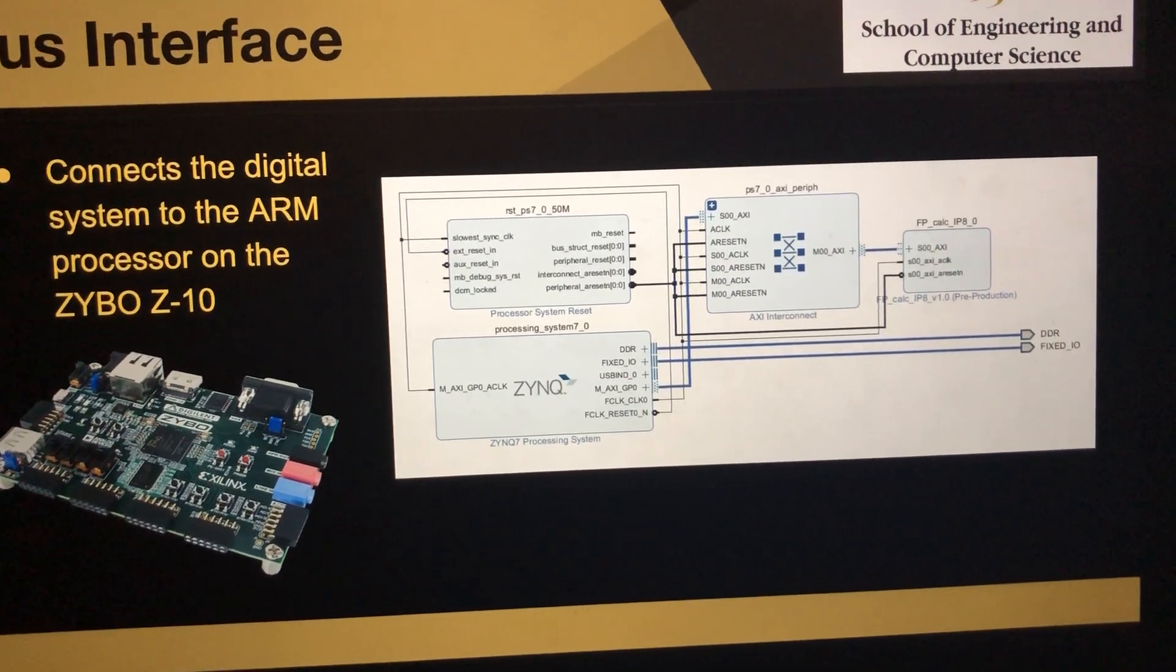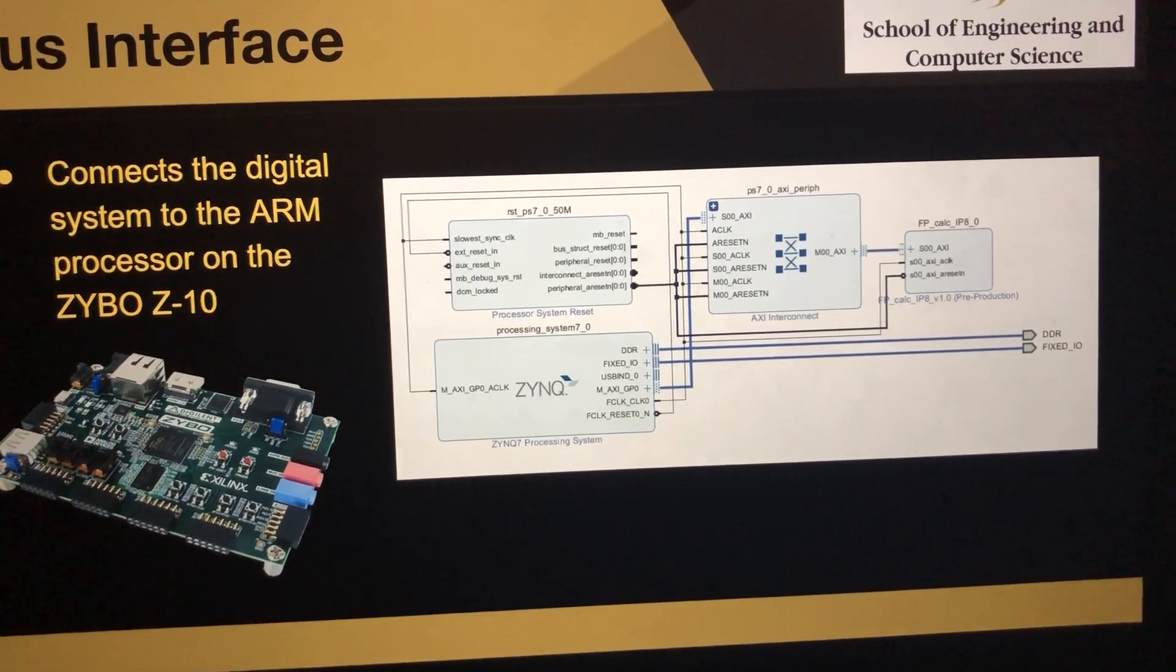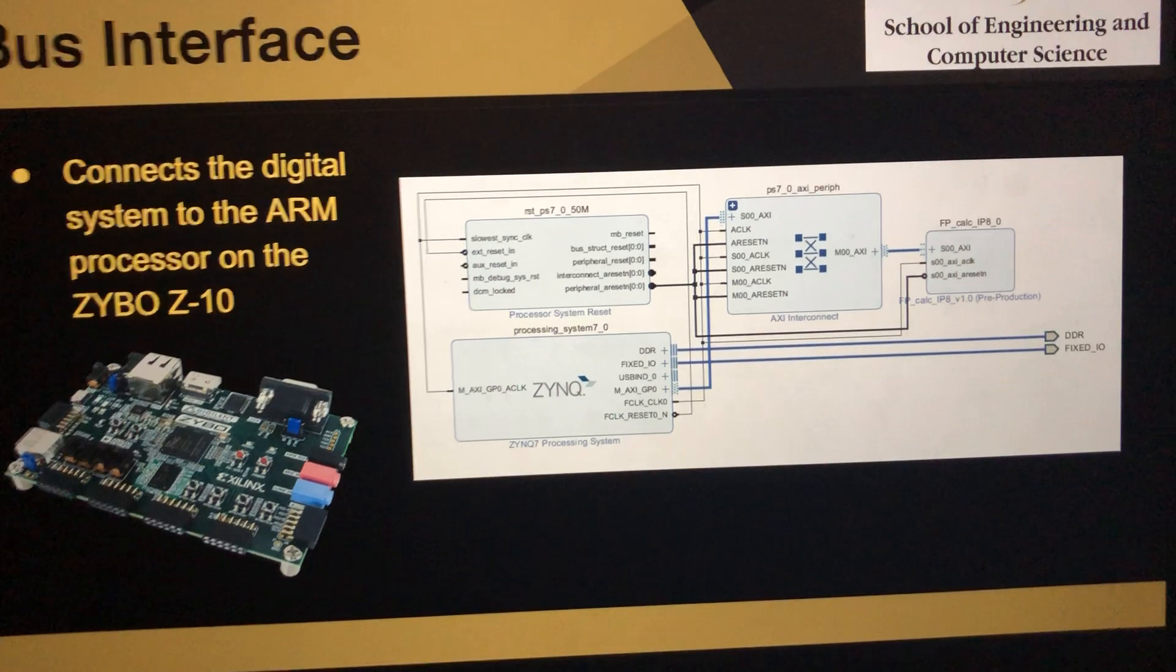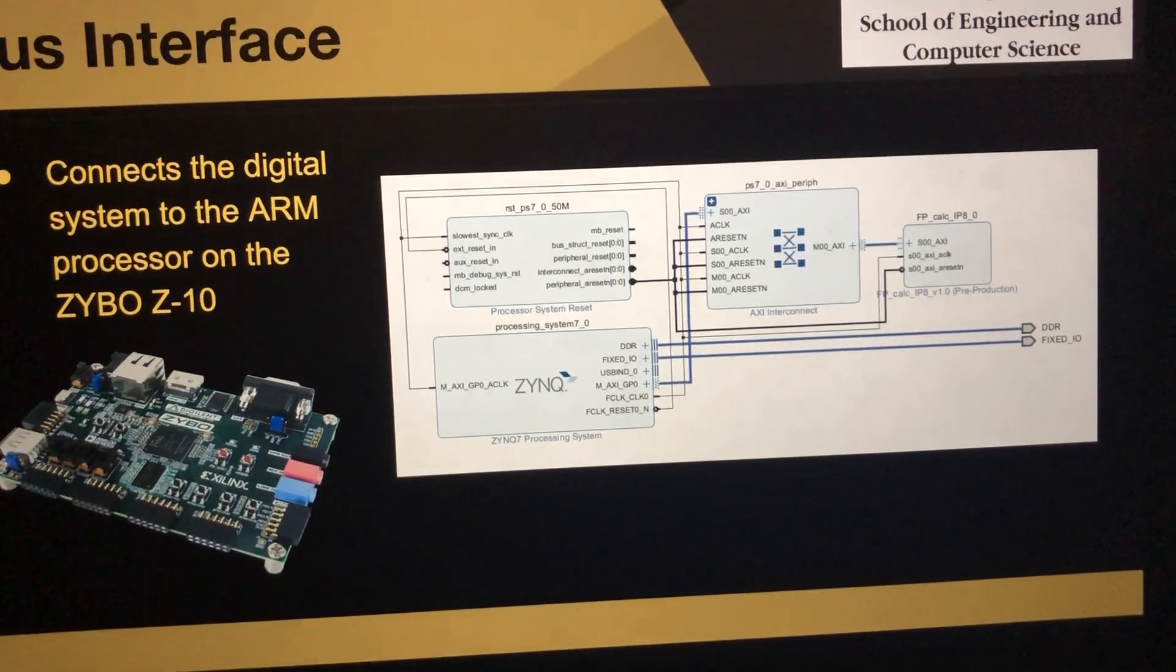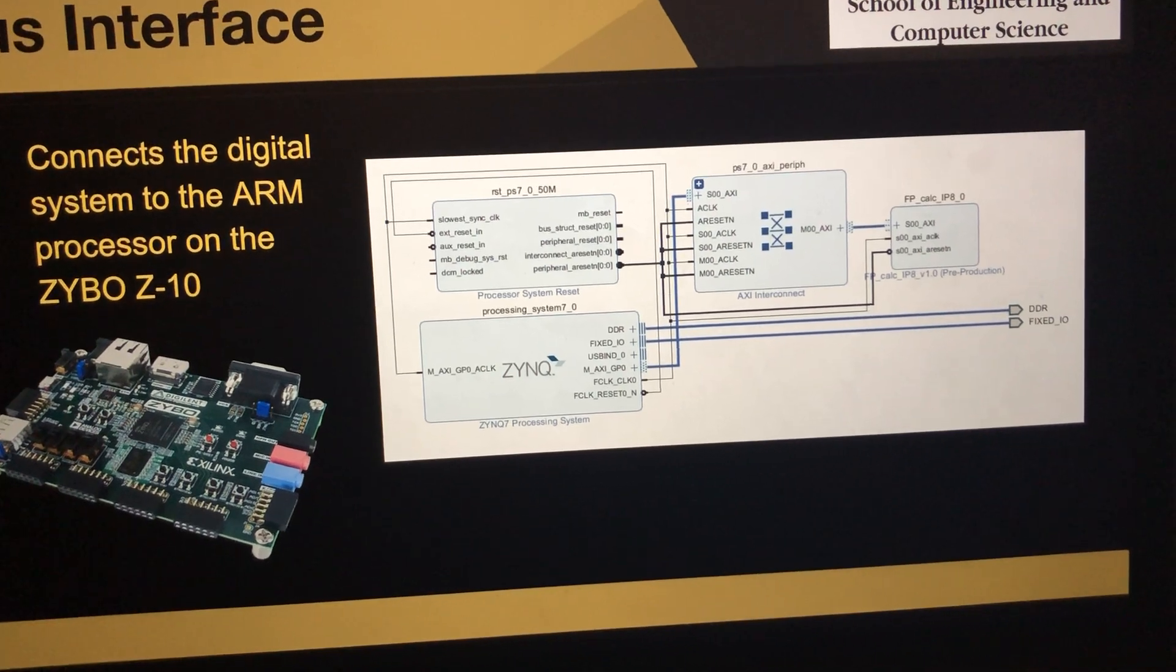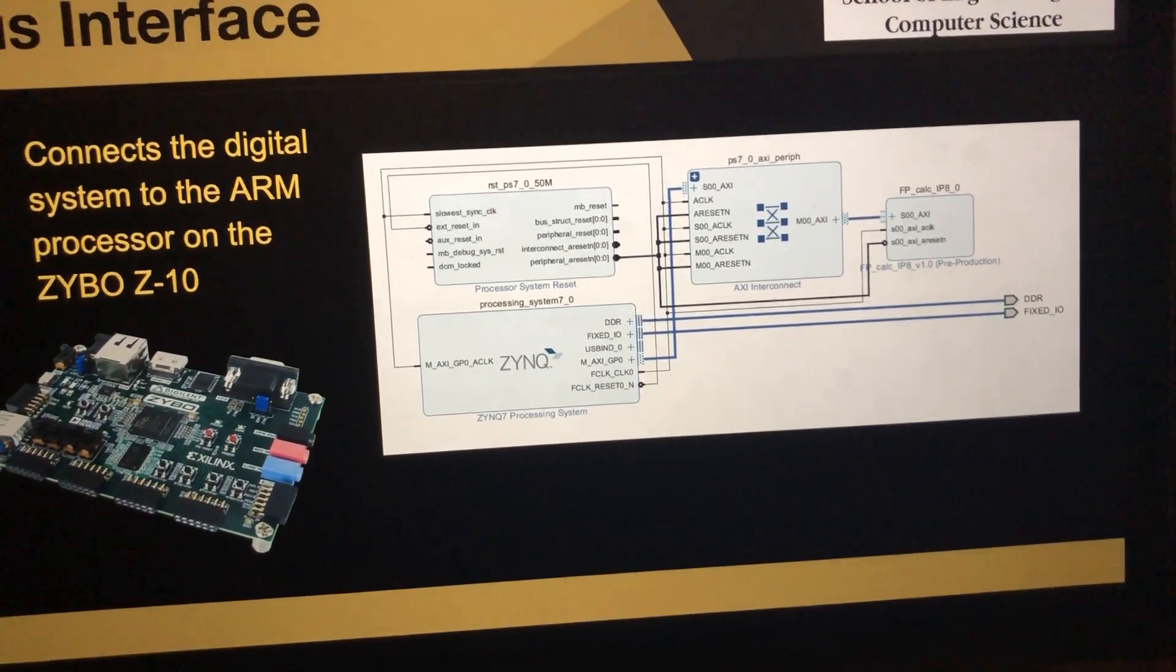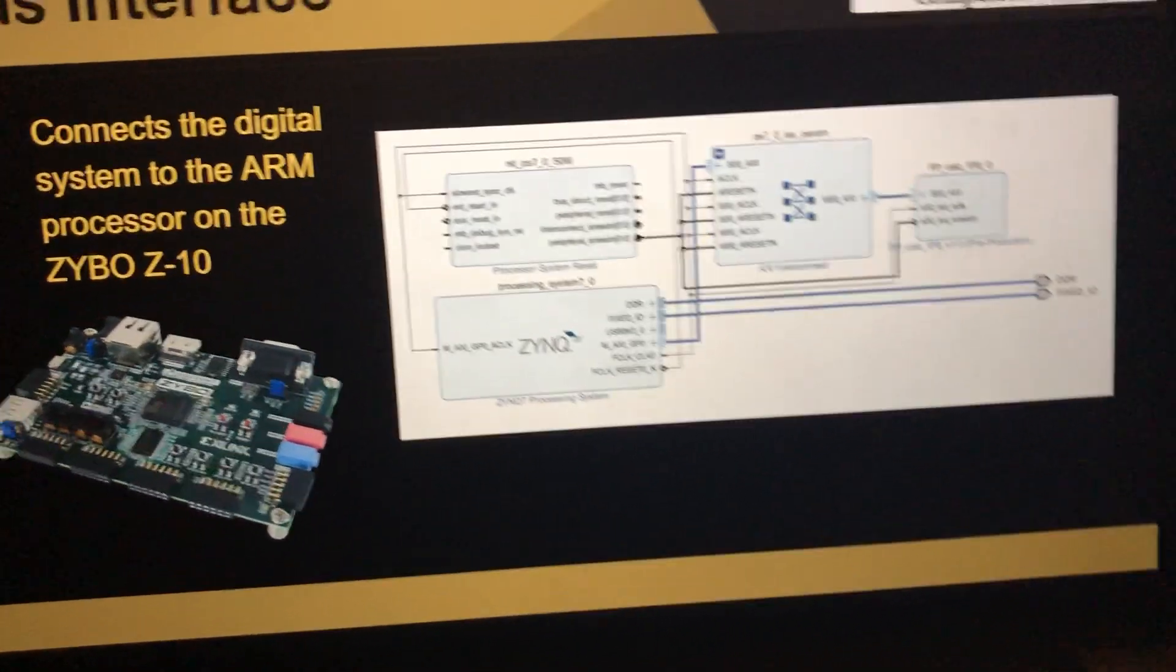That connects to the Zynq processing system and a couple other blocks, including the AXI interconnect. This diagram shows how we connected to the ARM processor on the Zybo Z7-10 board.